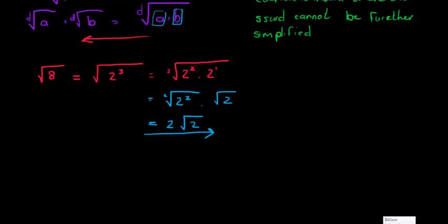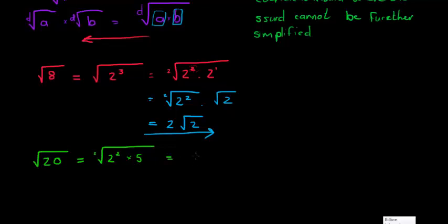Let's look at another example: the square root of 20. 20 can be written in prime numbers as 4 × 5, where 4 is 2². Again, one factor has an exponent divisible by the degree 2, giving us 2 × √(2²) × √5. The square root of 2² is just 2, so the square root of 20 equals 2√5. Five can't be broken down further — it's already its smallest prime.